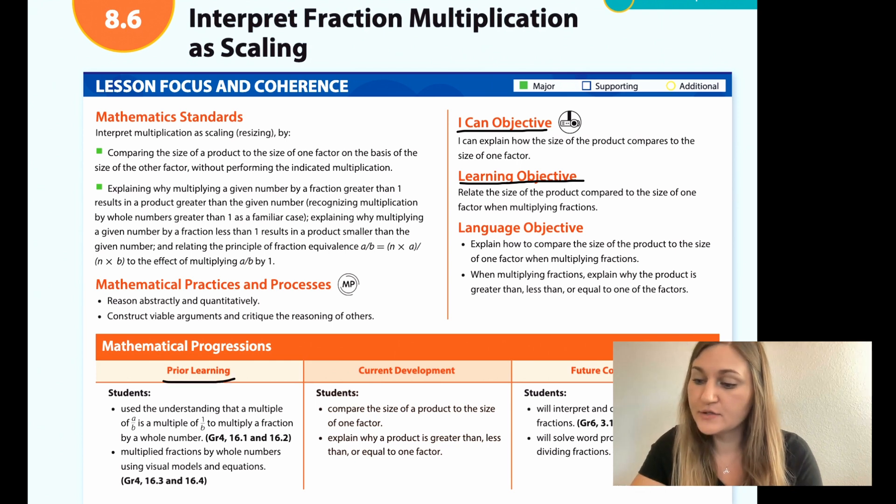The prior learning is that students use the understanding that a multiple of a over b is a multiple of one over b to multiply a fraction by a whole number and students multiply fractions by whole numbers using visual models and equations.